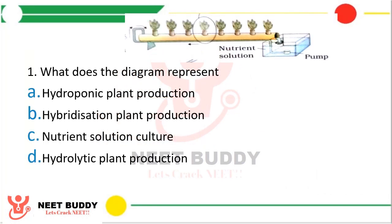Question 1: What does the diagram represent? Option A, hydroponic plant production. Option B, hybridization plant production. Option C, nutrient solution culture. Option D, hydrolytic plant production. This is a diagram from NCERT. The correct answer is Option A, that is hydroponic plant production.